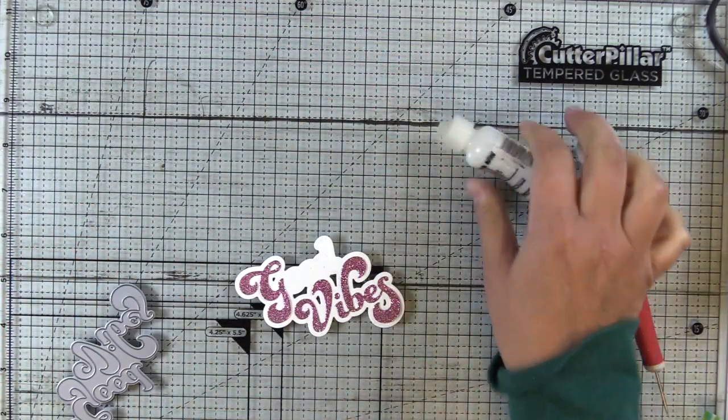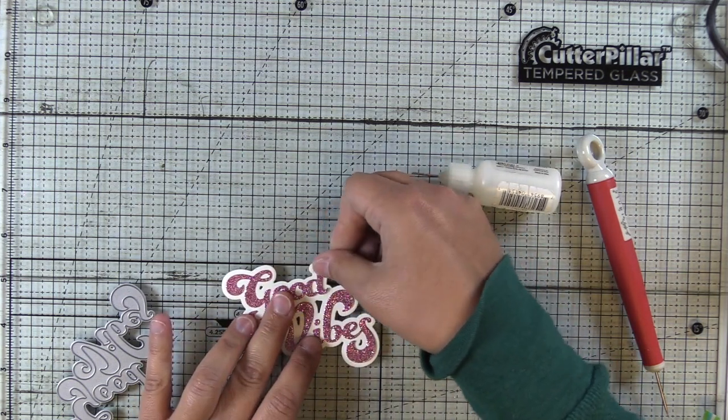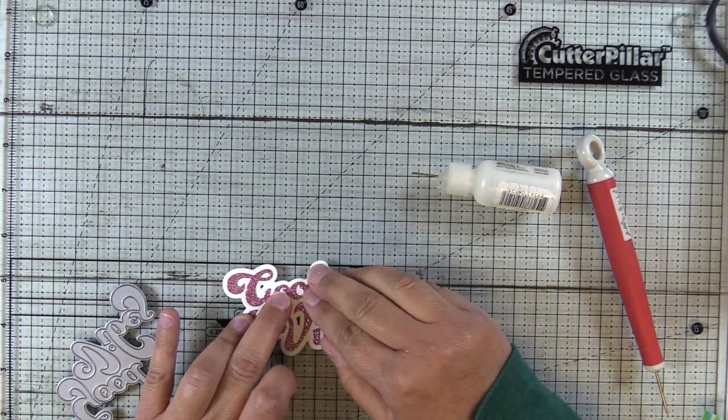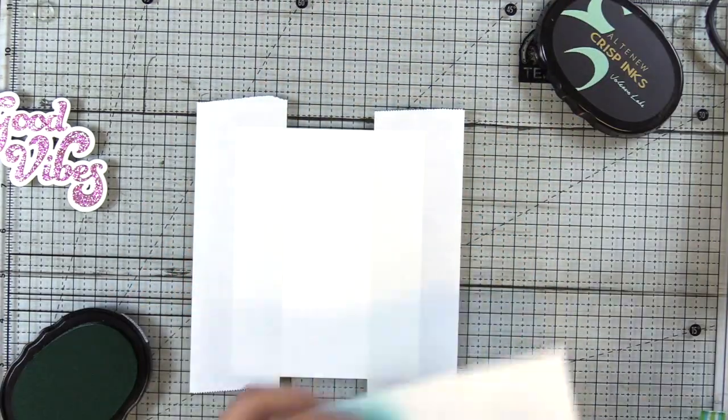So I'm going to knock off any excess powder just straight into my trash can so that it's not all over the place. I die cut the shadow out of classic crest solar white and then I'm just adhering down my die cut pieces.